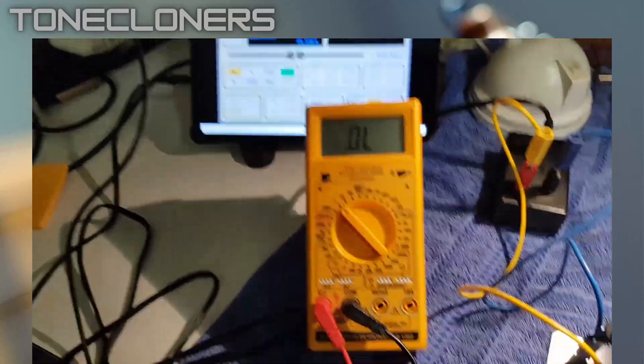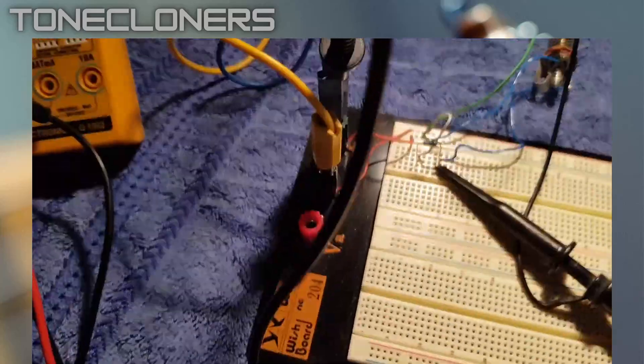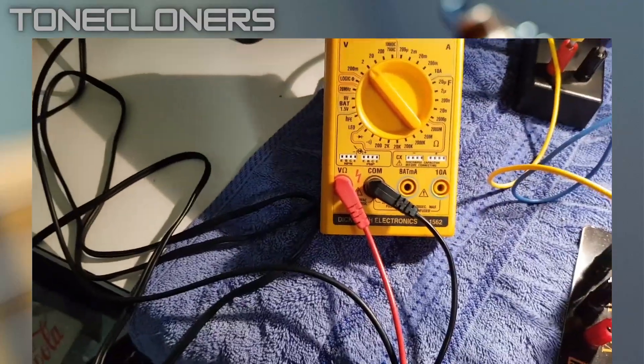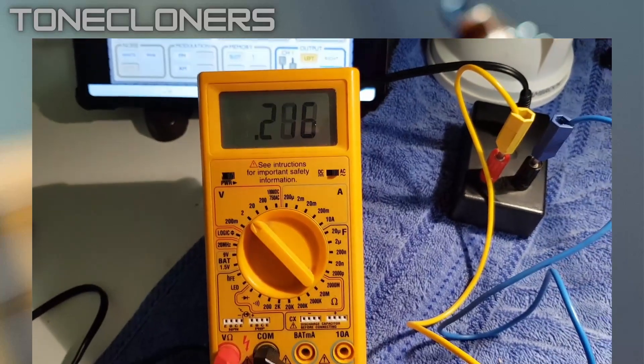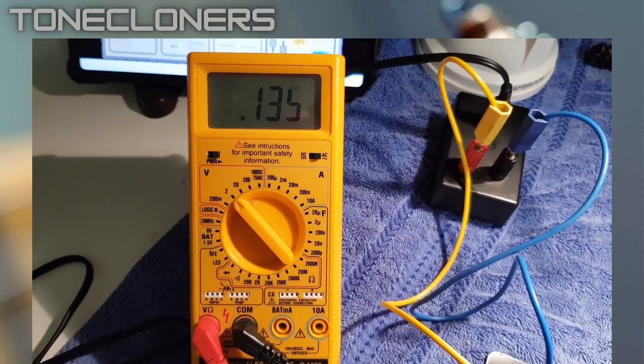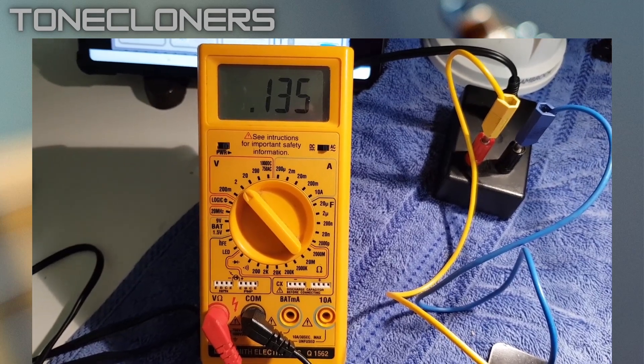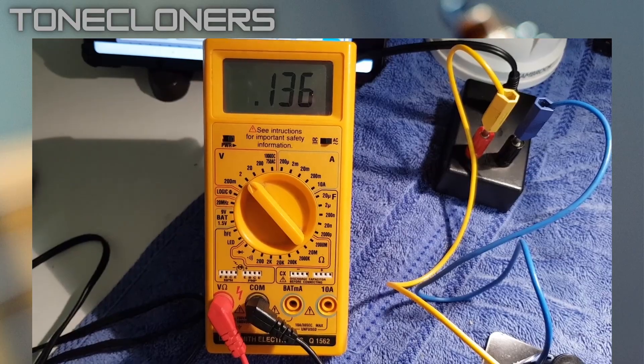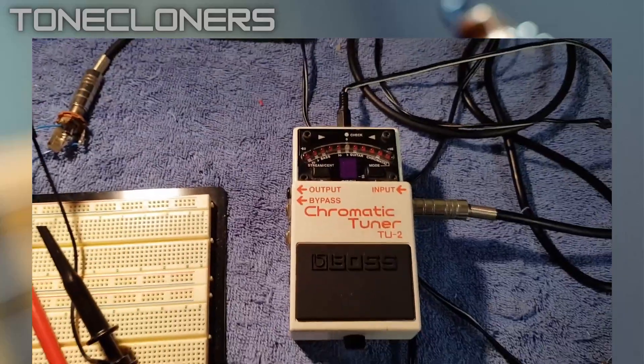On RMS AC, I have to disconnect the scope because that itself has an input impedance of 1 megaohm, which would load things. So the multimeter gives us 0.133, 1, 3, 4. So according to this circuit, the input impedance of the TU2 is...